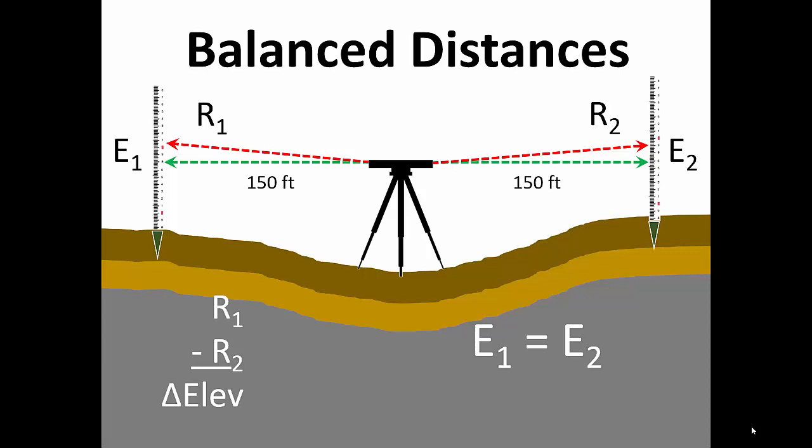For our example here, reading R1 is 5.43 feet and reading R2 is 3.21 feet. So the true elevation difference is 2.22 feet.